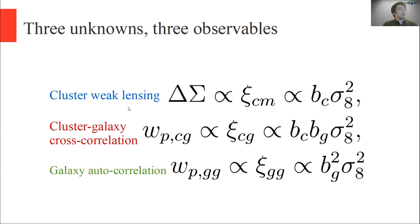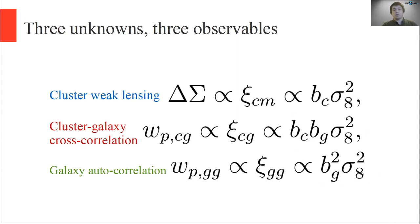The combination we believe works is this: we have three observable quantities proportional to correlation functions, and those correlation functions are proportional to three unknowns — sigma eight, the cosmology parameter we're most interested in, and then two bias factors. The cluster bias encapsulates information about the cluster mass observable relation; the galaxy bias encapsulates the relationship between the underlying matter distribution and the galaxies. At large scales where this relationship applies, you have three unknowns and three observables, so you can come up with an arithmetic combination of the three to get out any one of these things on its own. That's one way of thinking about why this is a powerful combination of observables.